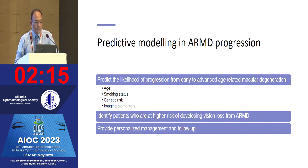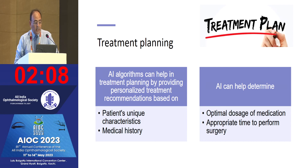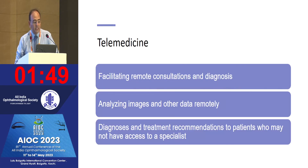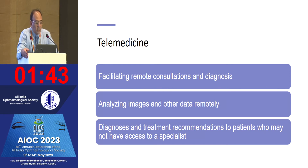Predictive modeling has also been used in ARMD progression on similar guidelines. AI can help in treatment planning by providing personalized treatment recommendations based on a patient's unique characteristics and medical history, and can help determine optimal dosage of medication and appropriate timing of procedures.